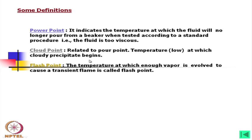Flash point is the temperature at which enough vapor is evolved to cause a transient flame. What is a transient flame? If you heat oil, you find that at a certain temperature a flash of fire appears on the oil, but again it comes and goes — that is called the flash point.